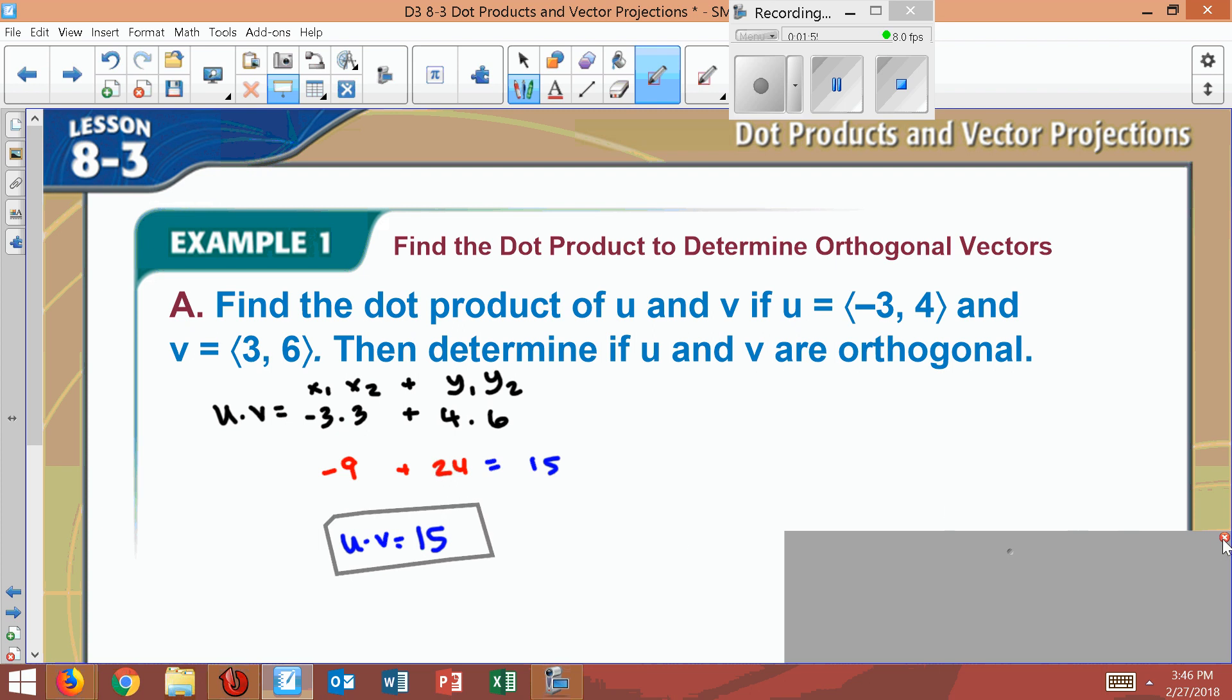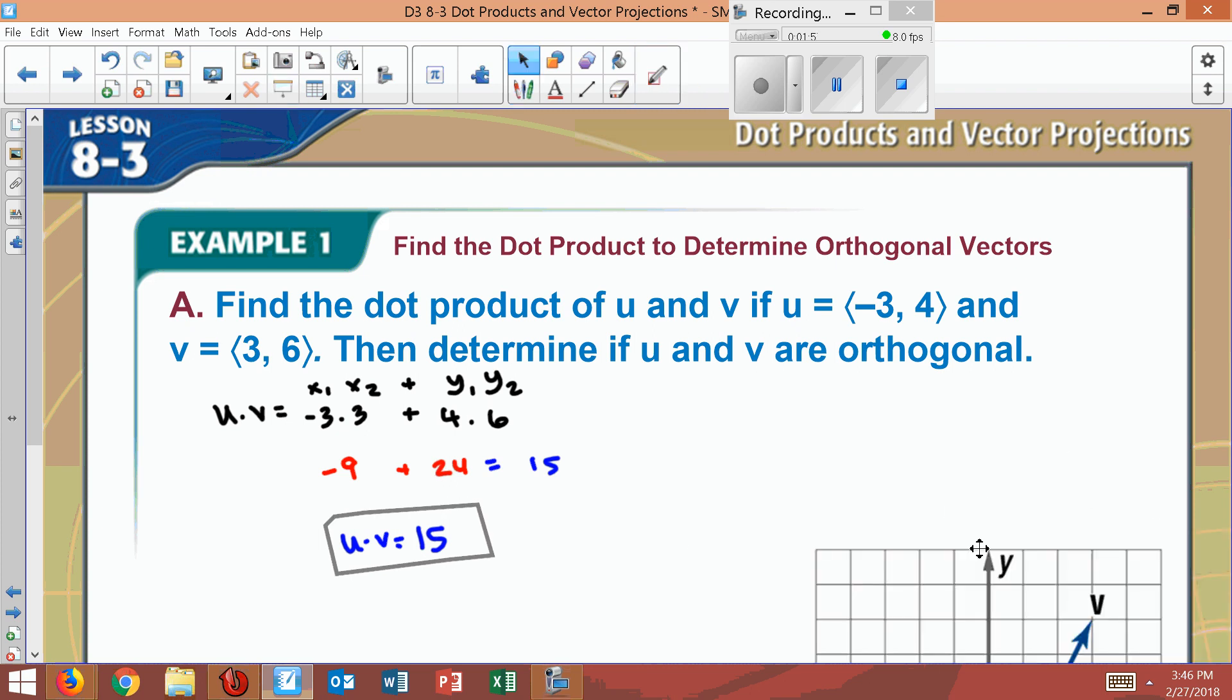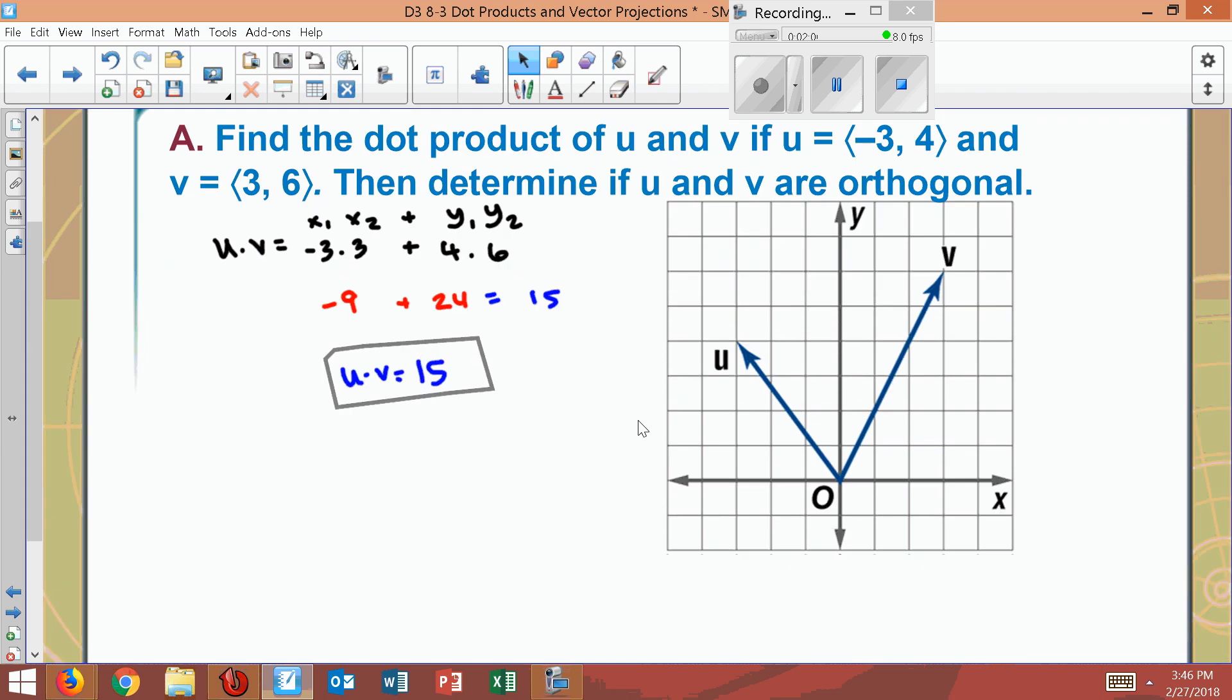Now, since it's not equal, these two are not orthogonal. As I look at the picture, you'll see that sure enough, there's not 90 degrees between them because it's not orthogonal. If that was 0, then that would be a right angle. So here's part B.